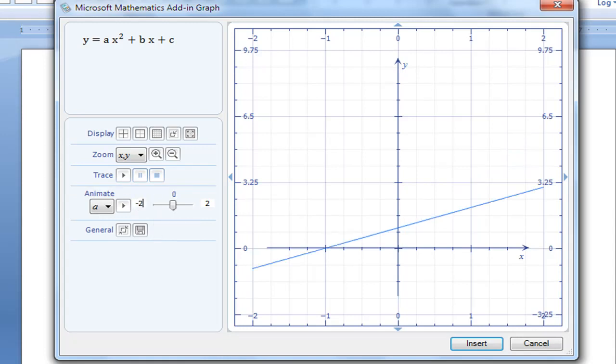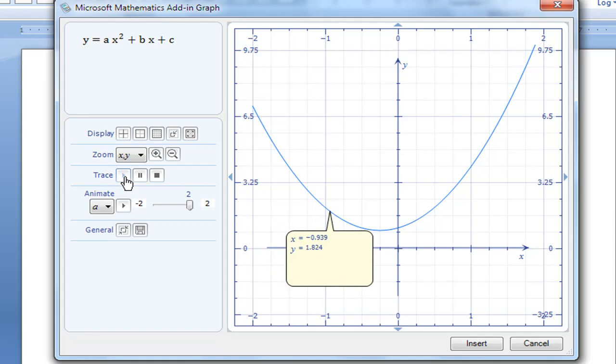Now if I click on Animation, you'll see the graph change, showing different parabolas from negative a to positive a, from -2 to 2. I can also use the trace feature, which tells me the x, y coordinates on this graph.